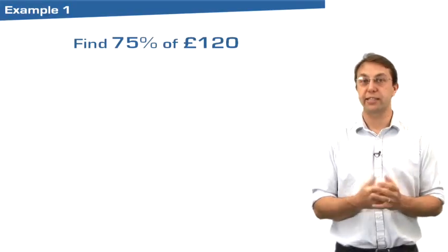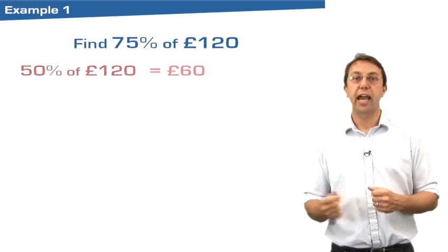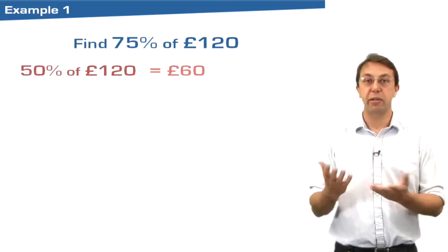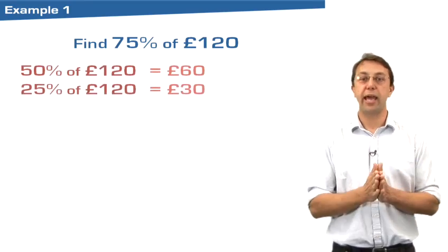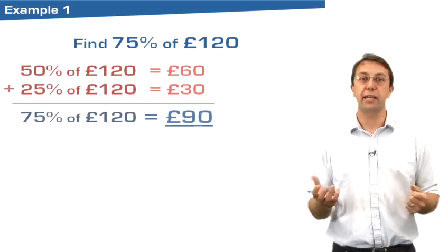Let's have a look at some examples to take this into a bit more detail. First, I'd say let's find 75% of 120. Well, the first thing I'm going to do is find 50% because that's easy. Just split it in half. And then I'll find 25% split it in half again. And I can see by adding the two together, 75% is 90 pounds.